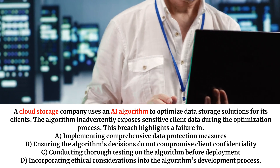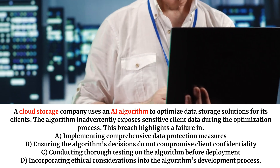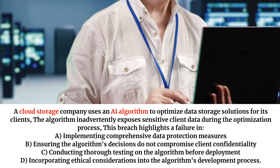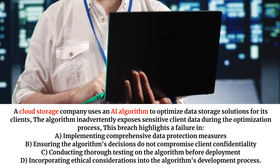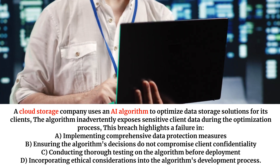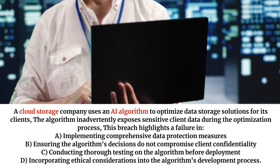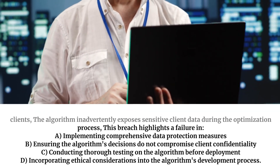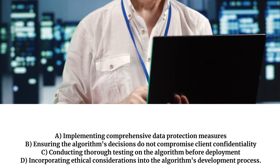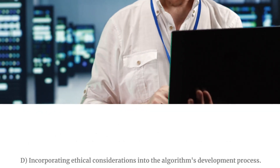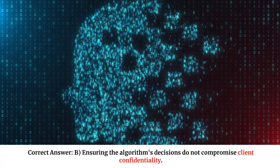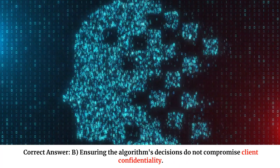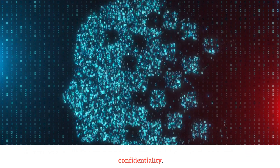This breach highlights a failure in: A. Implementing comprehensive data protection measures. B. Ensuring the algorithm's decisions do not compromise client confidentiality. C. Conducting thorough testing on the algorithm before deployment. D. Incorporating ethical considerations into the algorithm's development process. Correct answer: B — Ensuring the algorithm's decisions do not compromise client confidentiality.